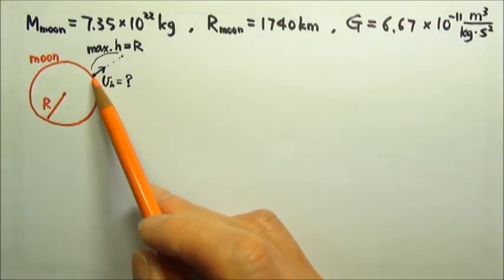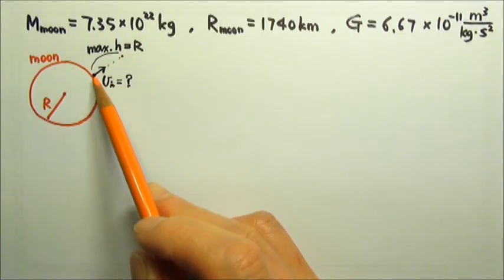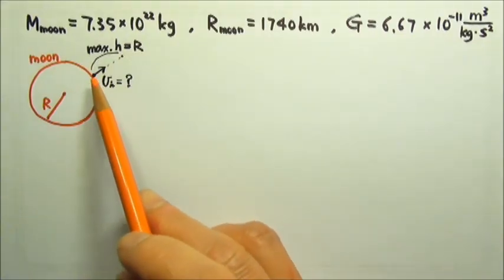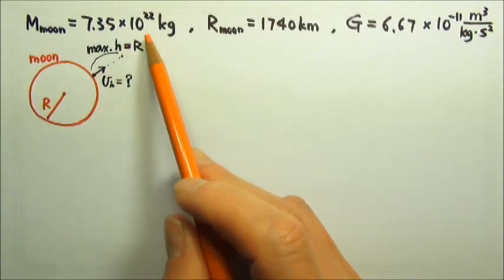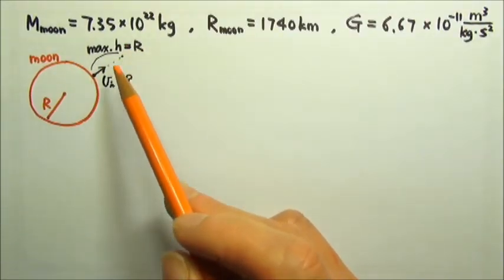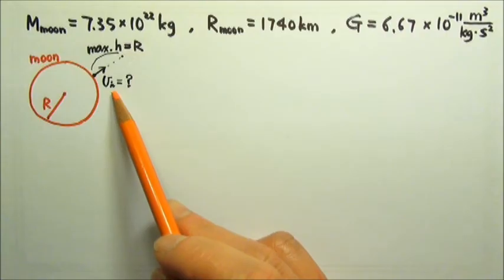An object is shot vertically upward from the surface of the moon. If we wish the object to reach a maximum height that equals the radius of the moon above the surface, how much initial speed is required?